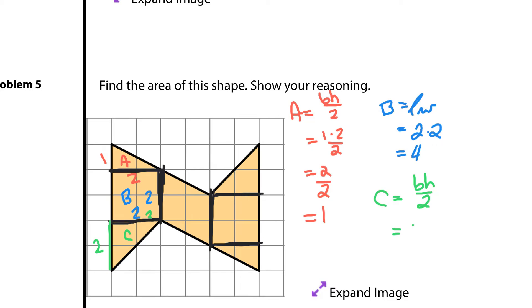And so we're going to have two times two, divided by two, which is four, divided by two, which is two. All right. Moving right along.